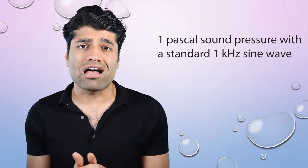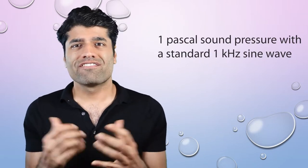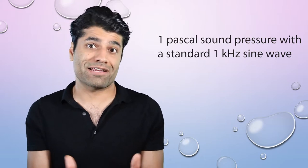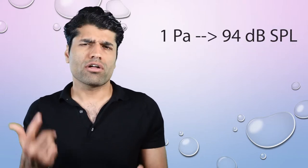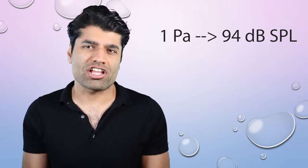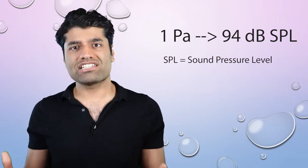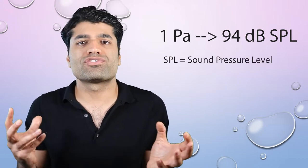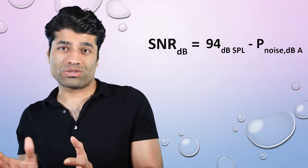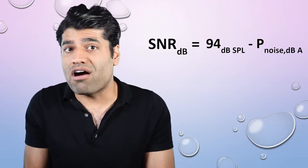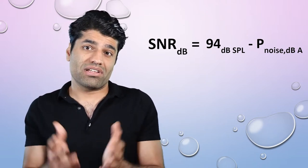Microphone manufacturers use one pascal sound pressure with a standard one kilohertz sound wave for testing microphones. One pascal is the same as 94 dB SPL and it is used for the meaningful signal. Therefore, SNR is equal to 94 dB SPL minus the power of noise in dB(A).